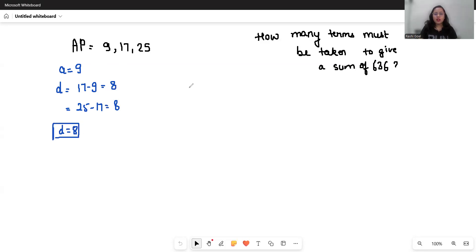Now what is given? The sum Sn is 636. So we have to find how many terms. How many terms means we have to find n.